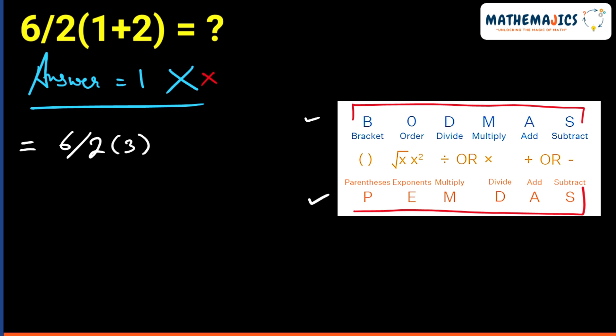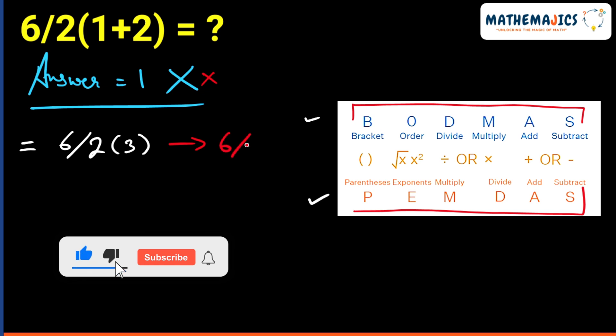Now the confusion here is that the question is written in a straight line. That's why most people solve it like this: 6 divided by 2 times 3 gives us 6 divided by 6, which gives us 1, which is wrong.